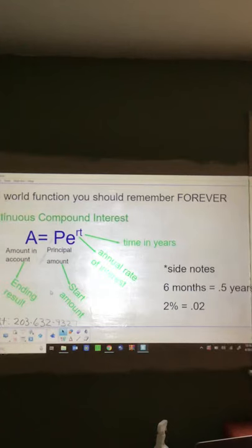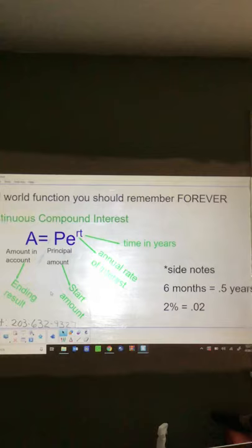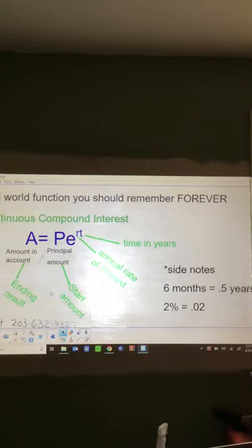This is the PERT function — P-E-R-T. If you remember PERT for the rest of your life, you can calculate almost any loan or account. When you go to buy a house, you can calculate it with PERT. There are other equations — called continuous compound interest functions — that give weekly or monthly breakdowns, but PERT is the most straightforward. It can help you calculate school loans, buying a house, buying a car, or any savings account.